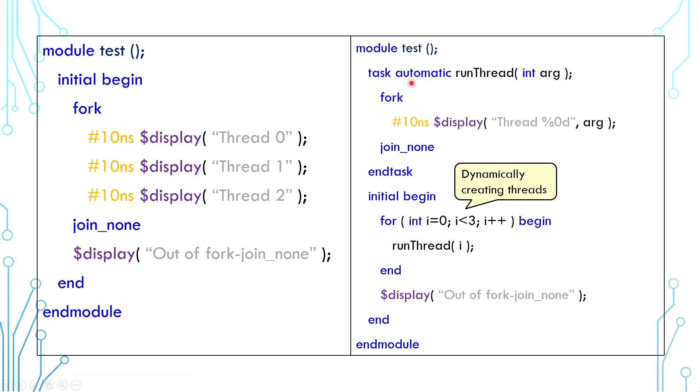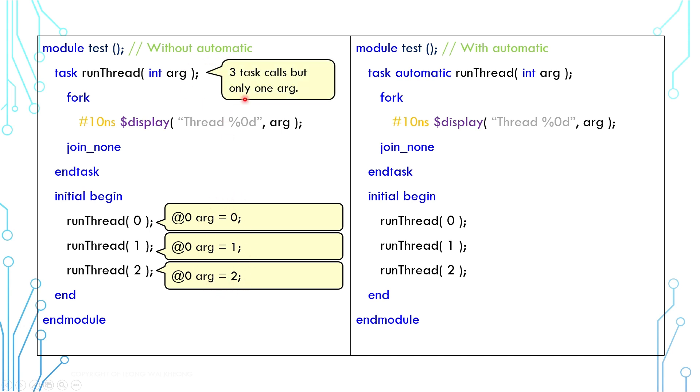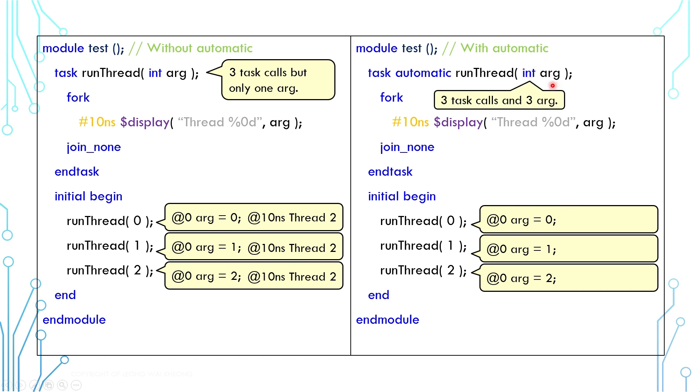The only gotcha is you must use automatic keyword in the task. Let's look at the one example without automatic keyword. Here we call this task three times, every time we pass in a different argument value. We thought that every call gets a unique value, but there is only one argument. We call the task three times and the final call decides the argument value. So all threads print the same message where the argument value is 2. With automatic, argument is created per task call. So at the end, every thread will get a different argument value and print its respective message.